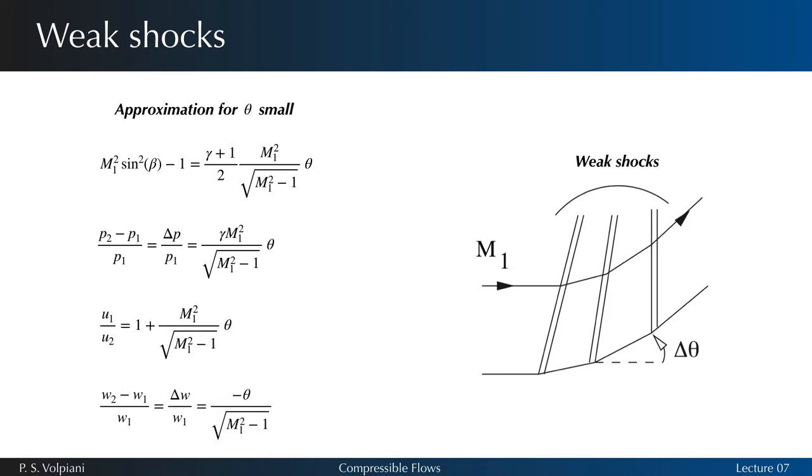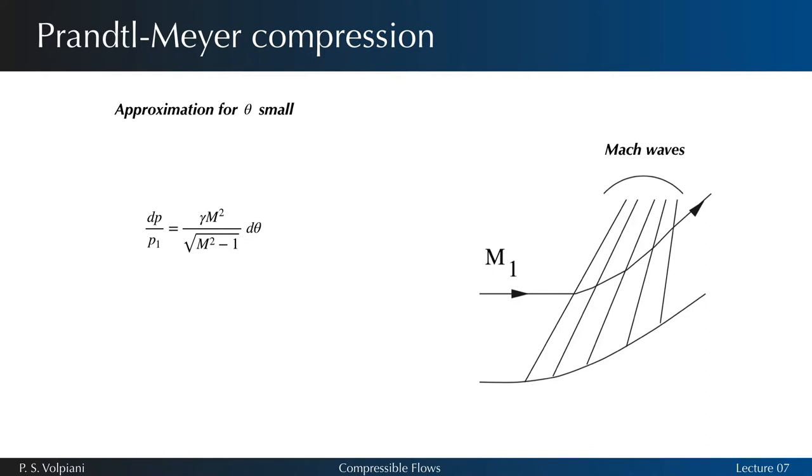If we now push the reasoning to its infinitesimal limit by making delta theta tend to zero, the regions of uniform flow are reduced to Mach lines, on which the properties of the flow are constant. In this case, the compression process is isentropic.